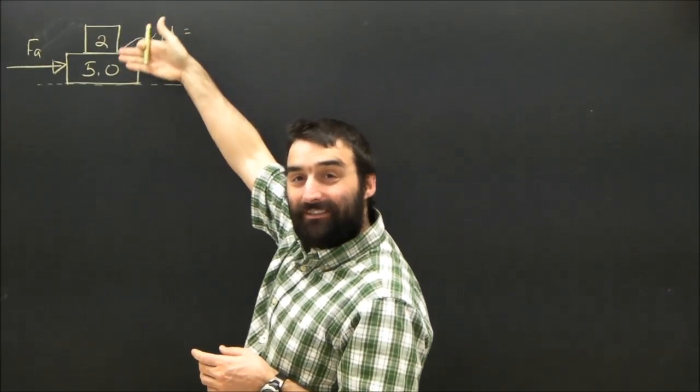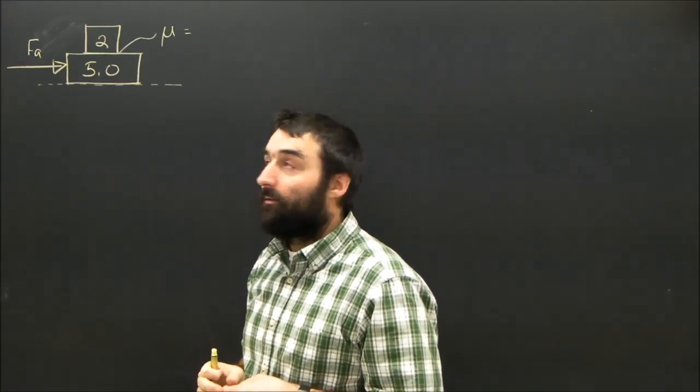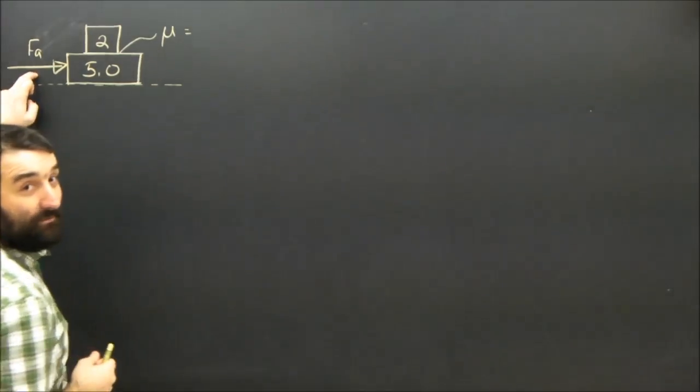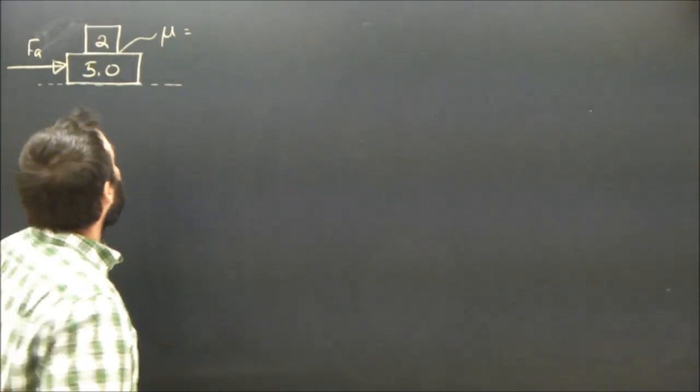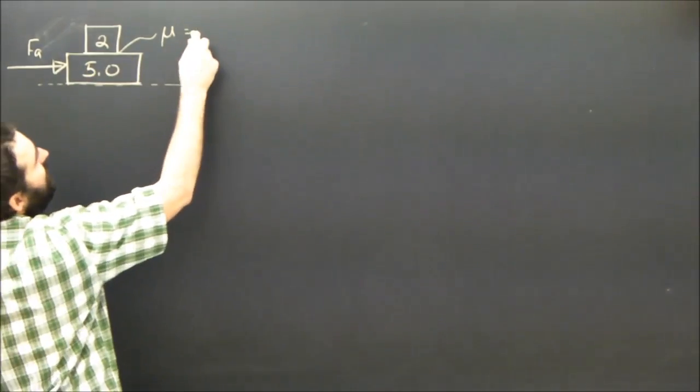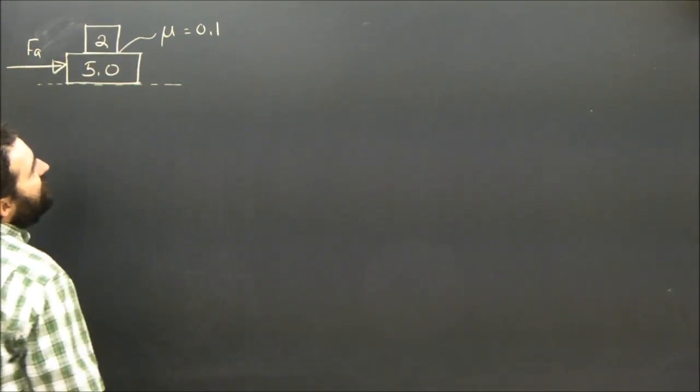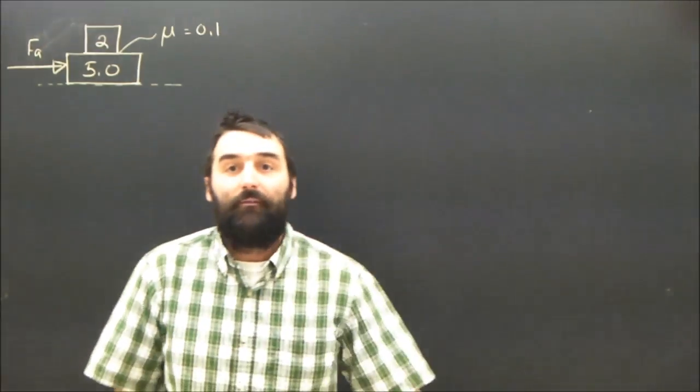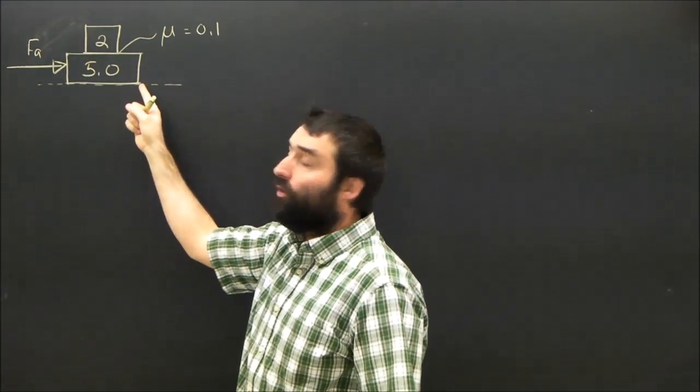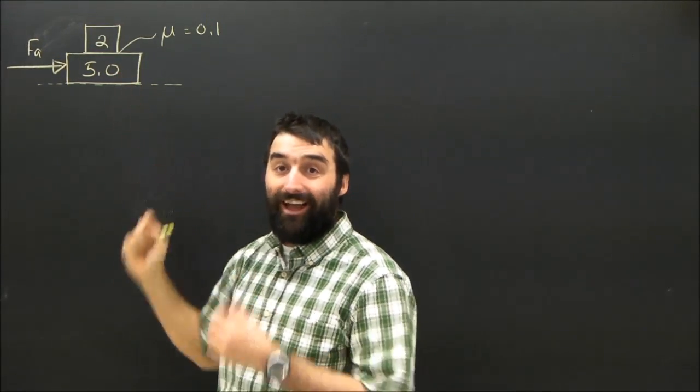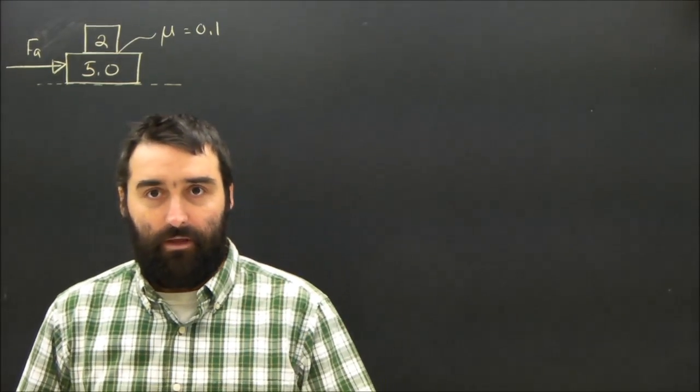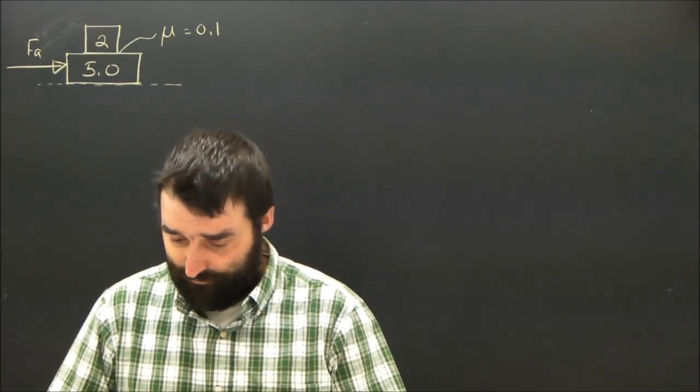A 2 kilogram block is resting on top of a 5 kilogram block, and an applied force is being applied to the 5 kilogram block. There is a force of friction between the two, and the coefficient is 0.1. For the time being, we're going to assume there is no friction between the bottom block and the ground. The mu there is zero. But don't worry, we'll make it something in part two.